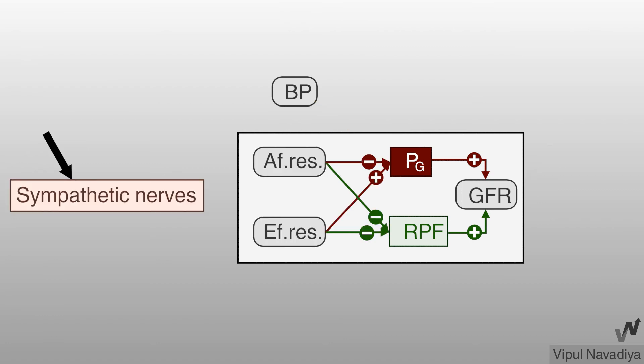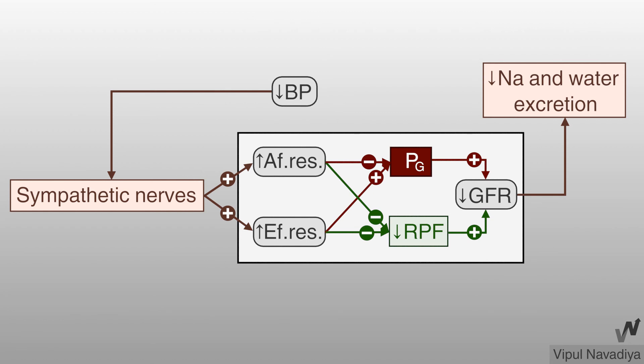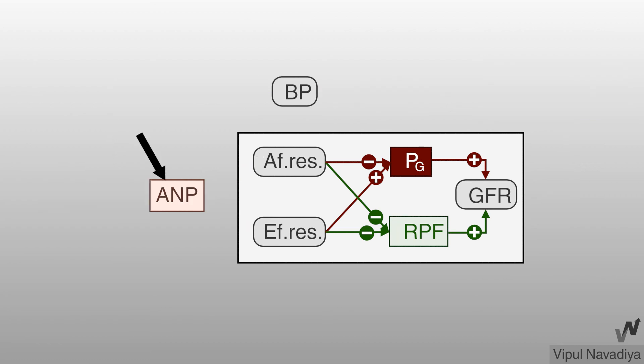Now let's see the role of sympathetic nervous system. This pathway is also activated when blood pressure decreases. Stimulation of sympathetic nerves causes constriction of afferent and efferent arterioles. This reduces renal plasma flow resulting in decreasing GFR. This reduces urinary excretion of sodium and water. Retained water increases extracellular fluid volume which helps restore blood pressure.